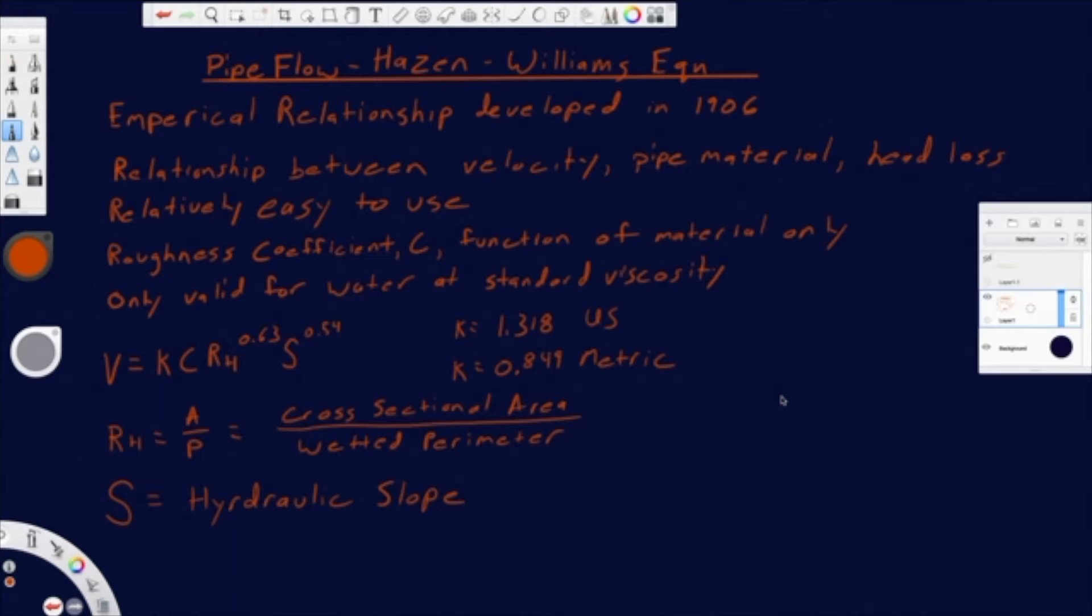There's a number of different similar equations. The Hazen-Williams equation is one of the easier to use equations, so I think you're more likely to see that on the FE. It's also something that's used very often in environmental engineering because of its relative simplicity to other types of similar equations.